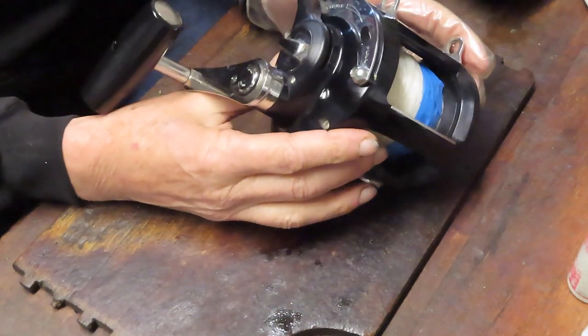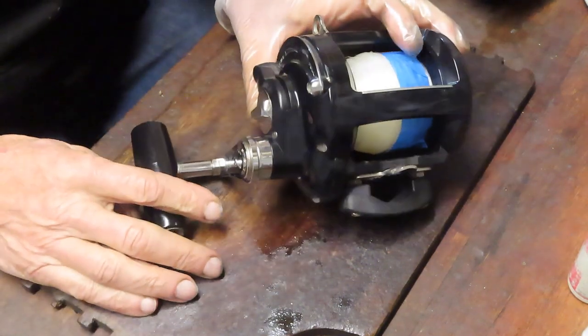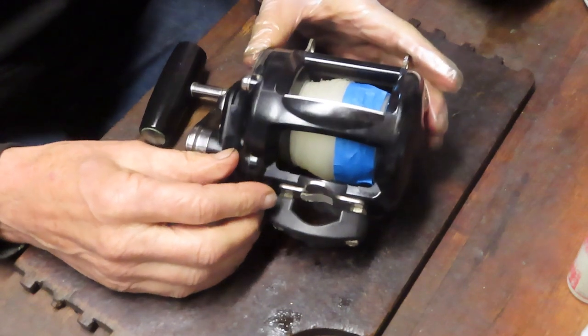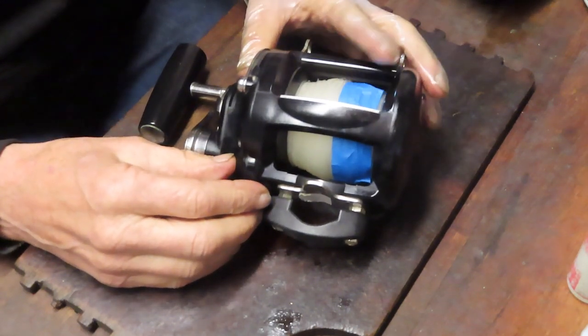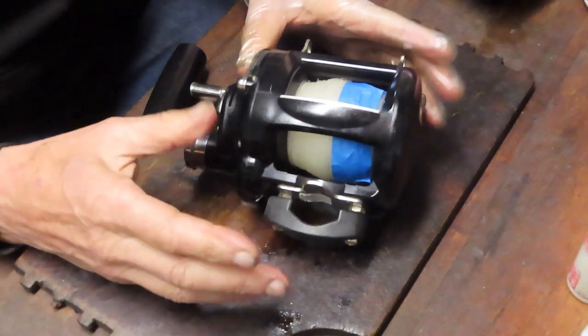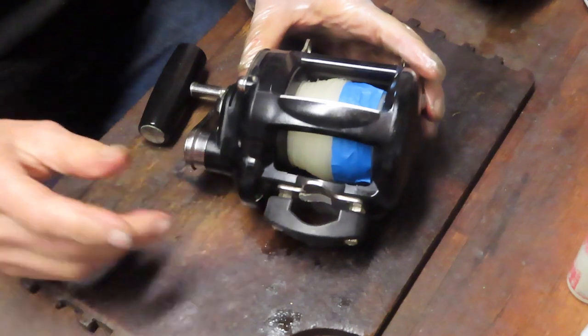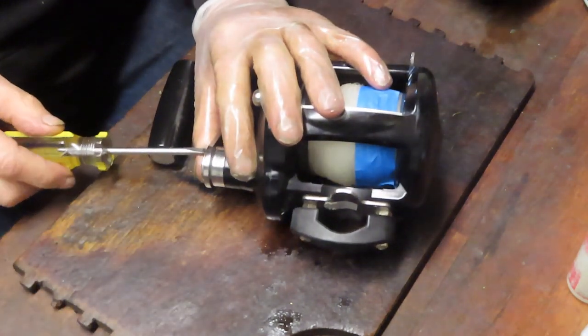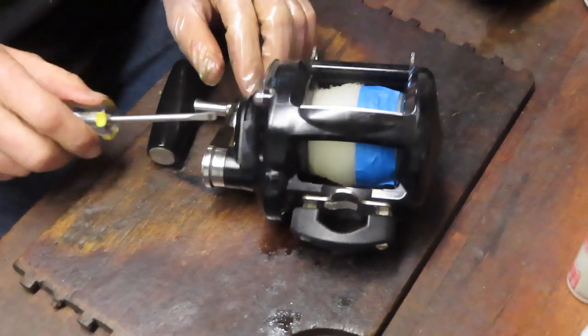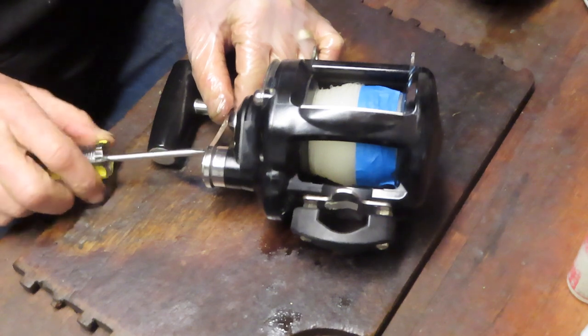But why was it the unfortunate timing? Well, right around that time, manufacturers started to introduce the small frame lever drag reels that used braid and saved space and saved bulk in the reel itself. That, coupled with Penn moving the production of most of their reels to China in 2005, kind of sealed this one as a short-lived reel.